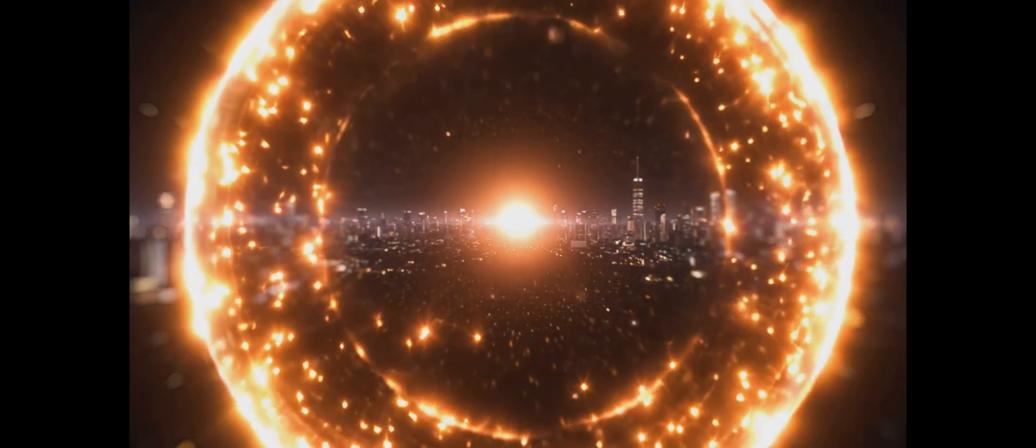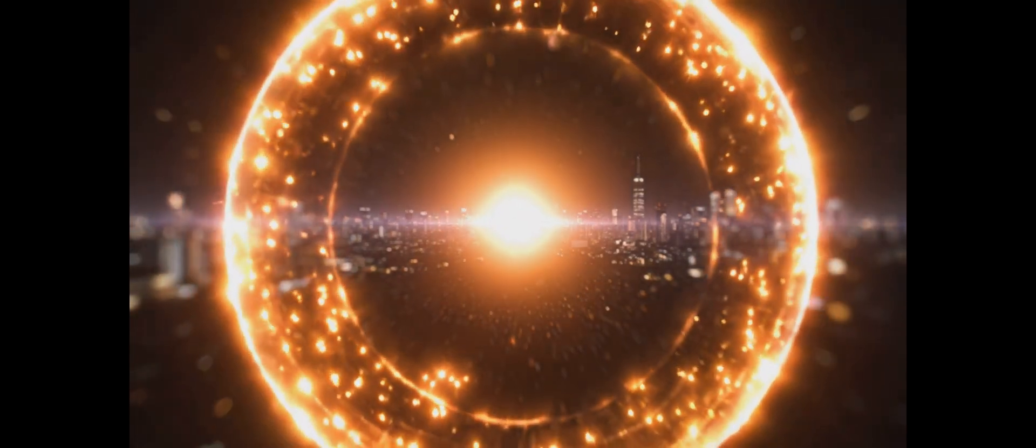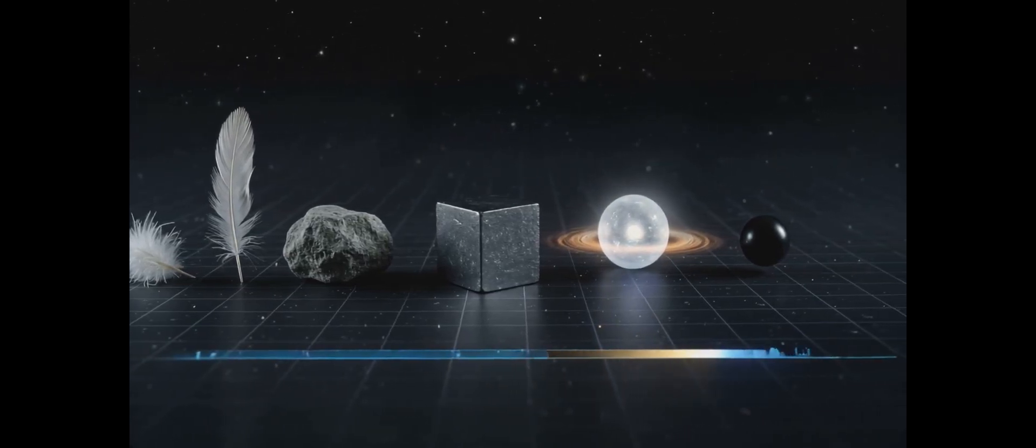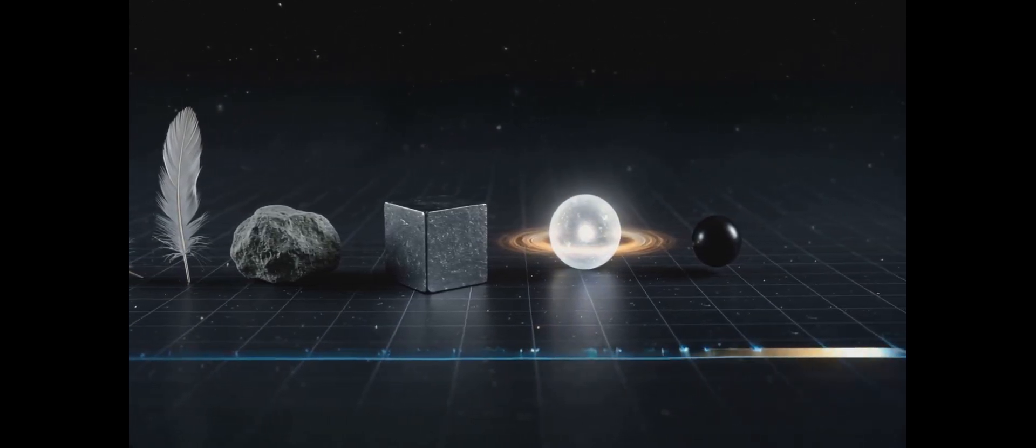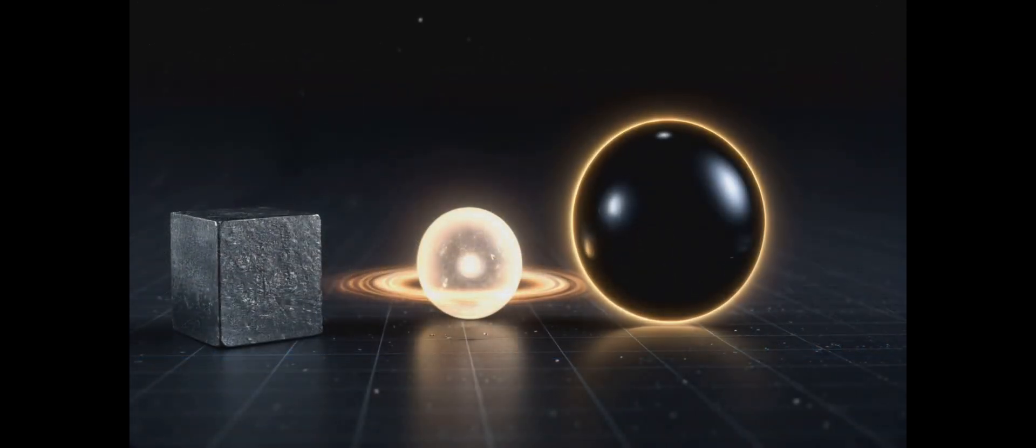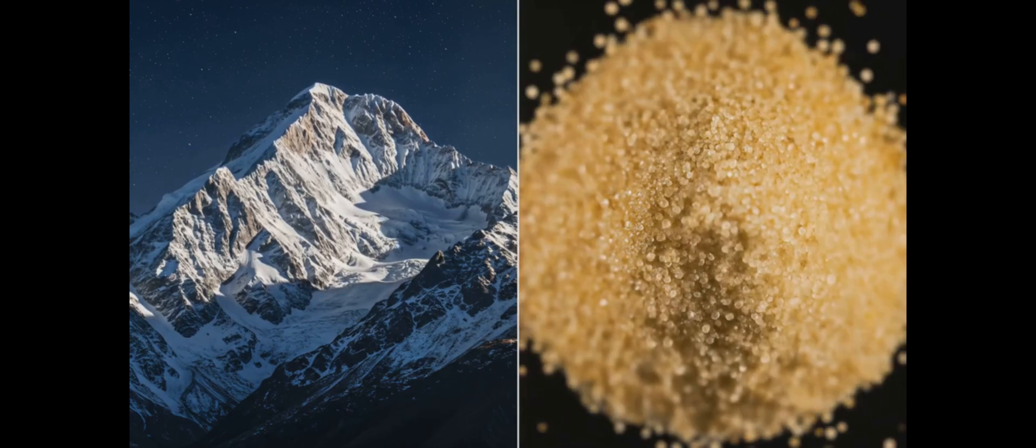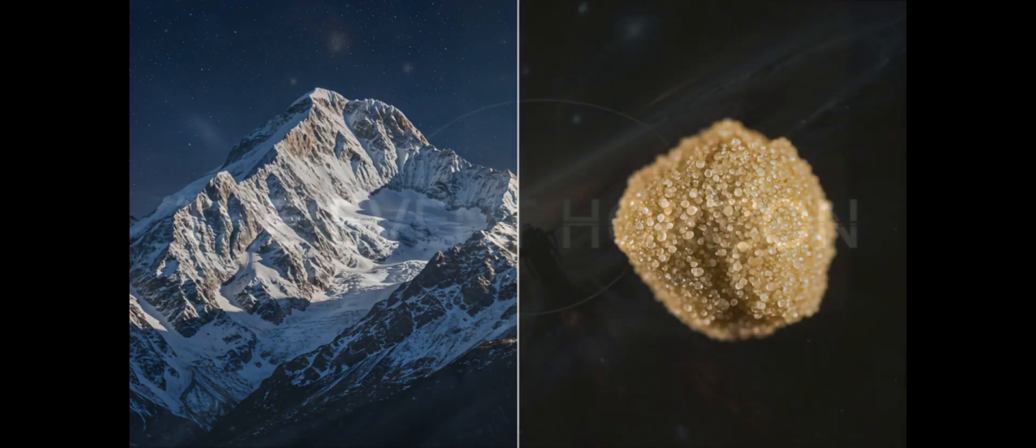Imagine, if you will, compressing the entire mass of our sun into a sphere the size of a small city, or in the case of supermassive black holes, millions or even billions of solar masses into a space smaller than our solar system. It's as if you could fit an entire mountain range into a single grain of sand. Can you picture that level of compression?